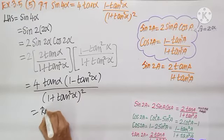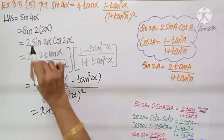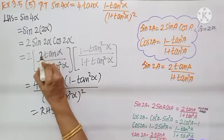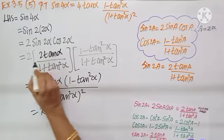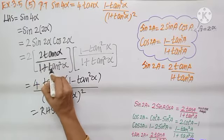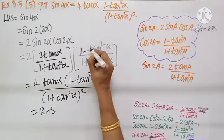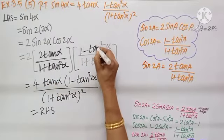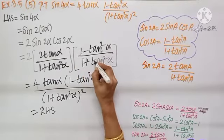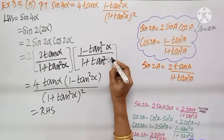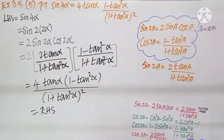That is 1 plus tan² α by 1 plus tan² α, the whole square, which is the RHS. So to recall: sin 2α is 2 tan α by 1 plus tan² α and cos 2α is 1 minus tan² α divided by 1 plus tan² α. Just multiply and you arrive at the RHS.